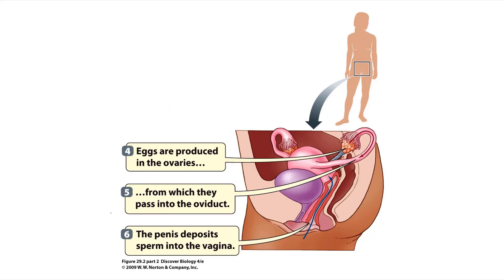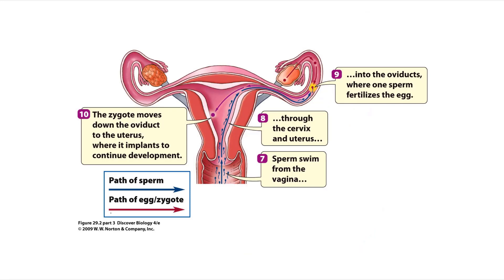In the female reproductive system, eggs are produced in the ovaries, from which they pass into the oviduct. During copulation, the penis deposits sperm into the vagina. The sperm swim from the vagina through the cervix and uterus into the oviducts, where one sperm fertilizes the egg. The fertilized egg, known as a zygote, moves down the oviduct to the uterus, where it implants to continue development.